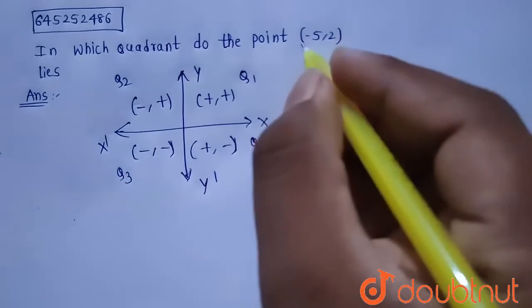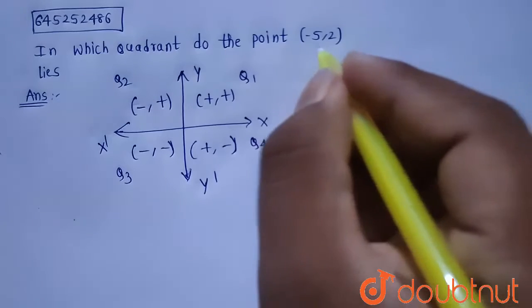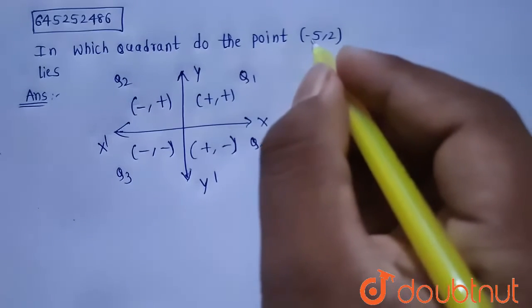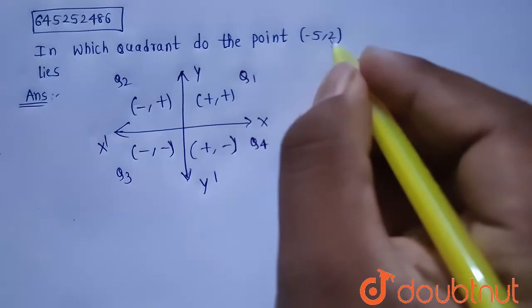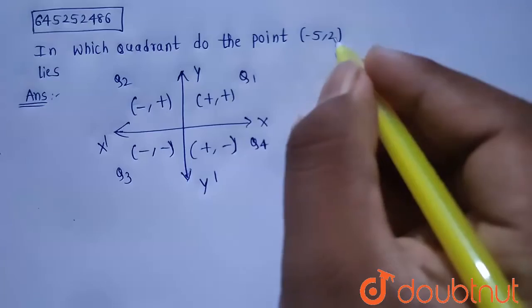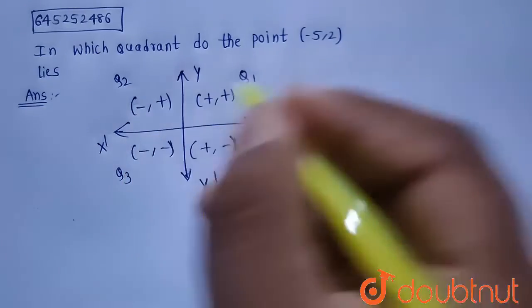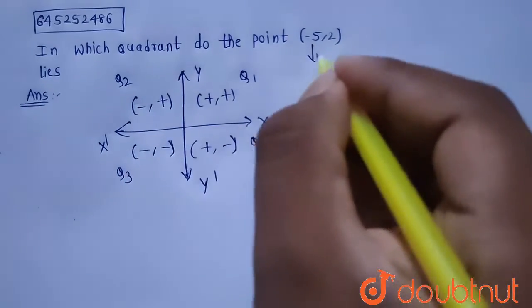Now, given the point is (-5, 2). In this case, the x-coordinate is clearly negative and the y-coordinate is positive. So the x-coordinate is negative and the y-coordinate is positive, which is possible in Quadrant 2.